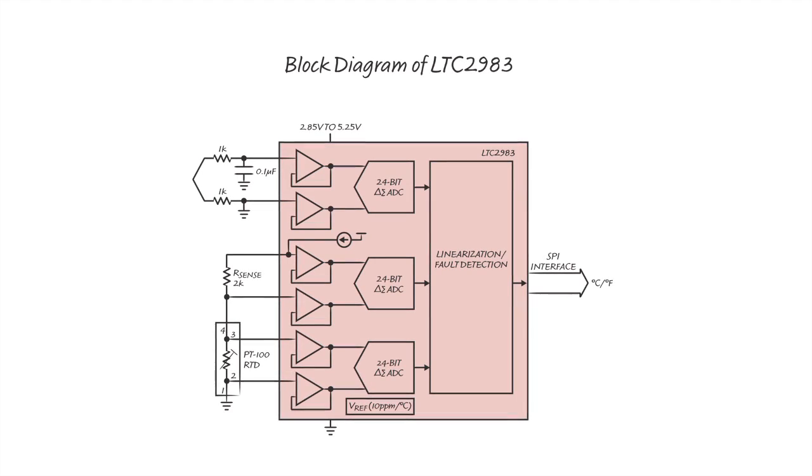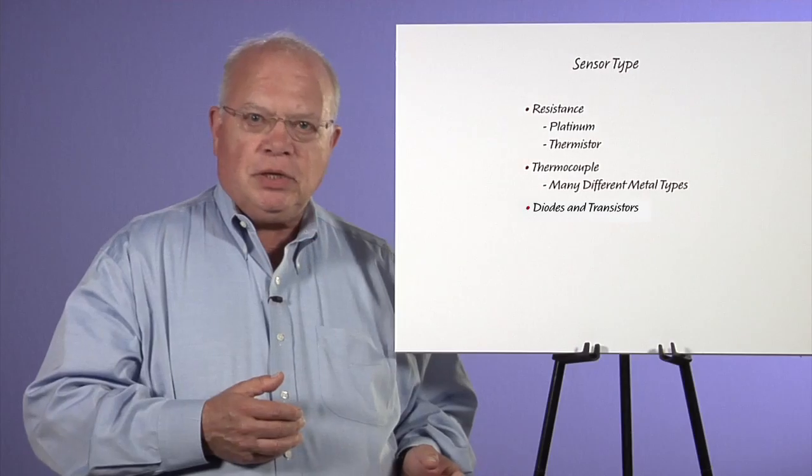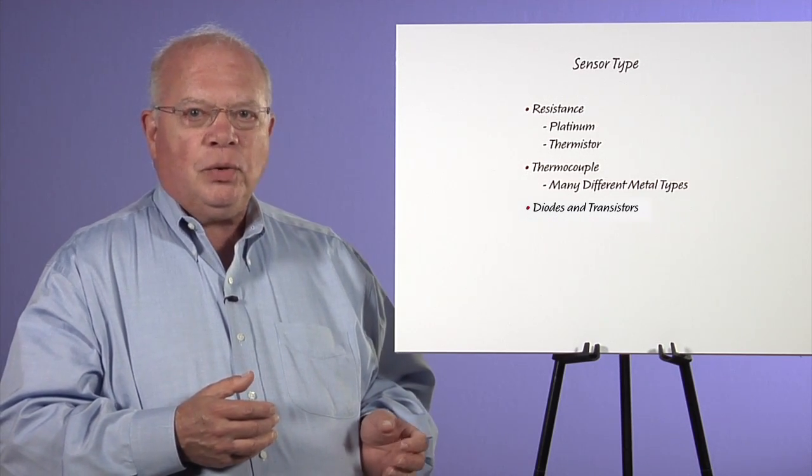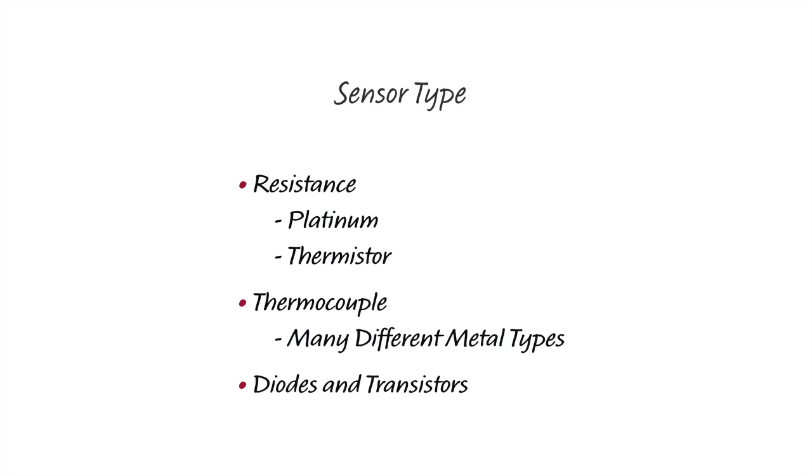Most of the inaccuracies come from the sensors. We have three major temperature sensor types: resistance sensors, which can be either platinum or thermistor; thermocouples, which have a multitude of different wires and output proportional to temperature difference; and diodes and transistors.